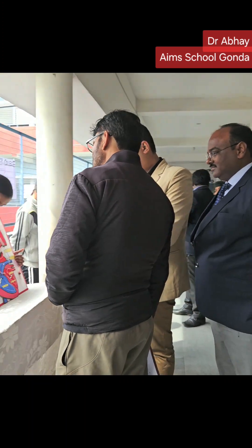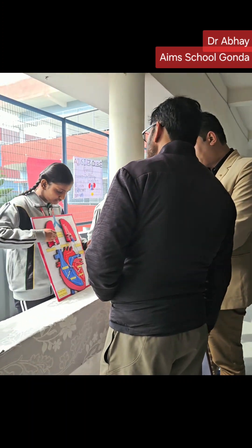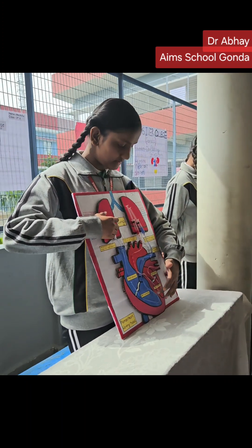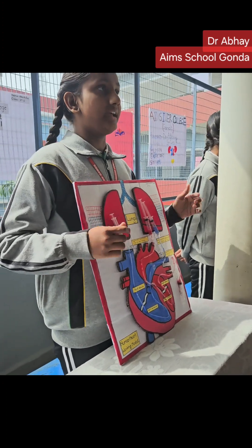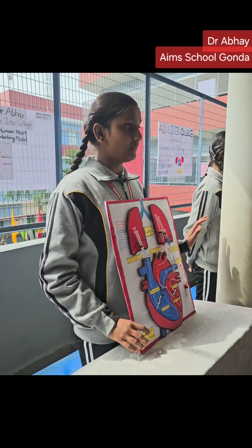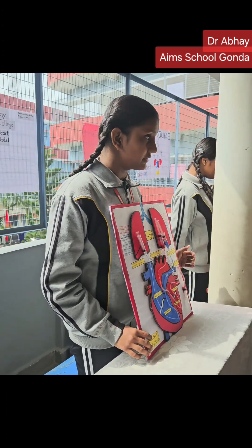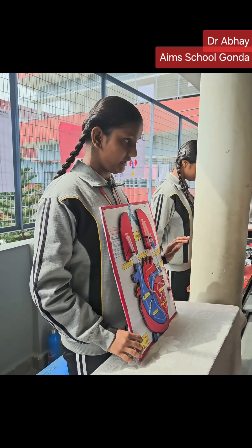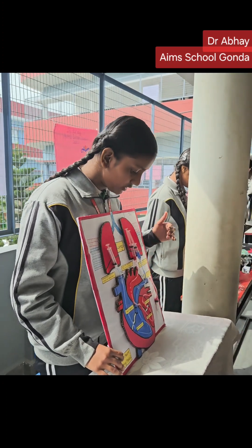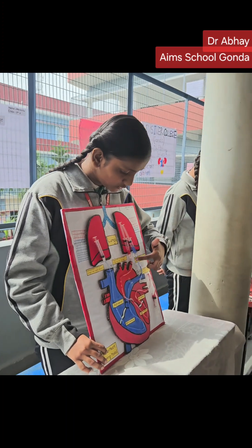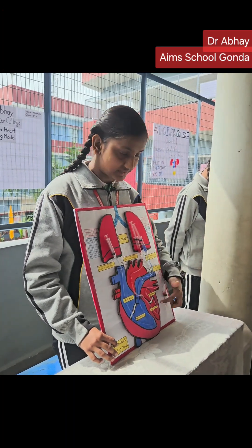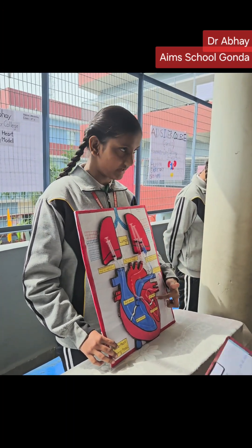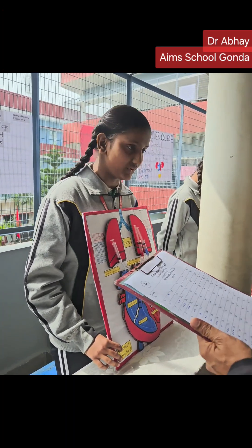When the impure blood from the body flows into the right atrium, right ventricle of the heart, it goes to the lung. In the lung, the impure blood is converted into purified blood. The pure blood flows into the left ventricle of the heart to be pumped throughout the body.